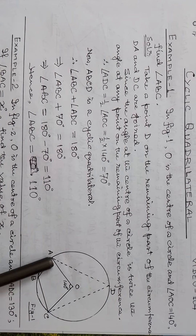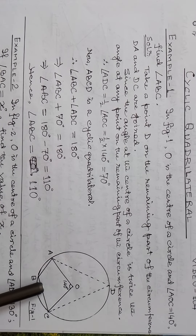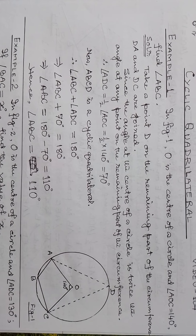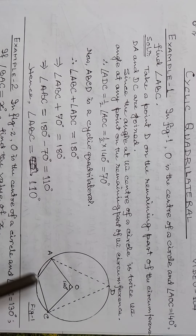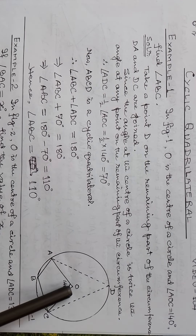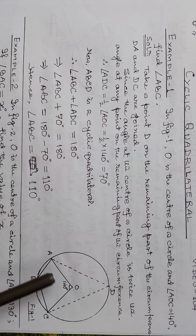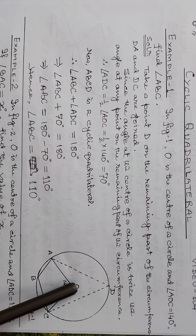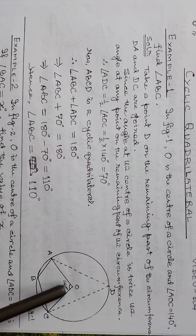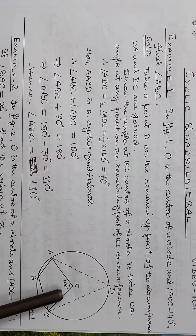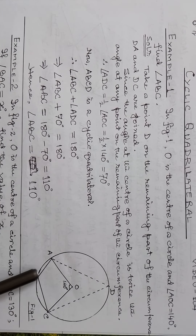Find angle ABC. Look at this angle — this is the center angle at O. Do not confuse it with other angles. The angle AOC at the center of the circle is 140 degrees.